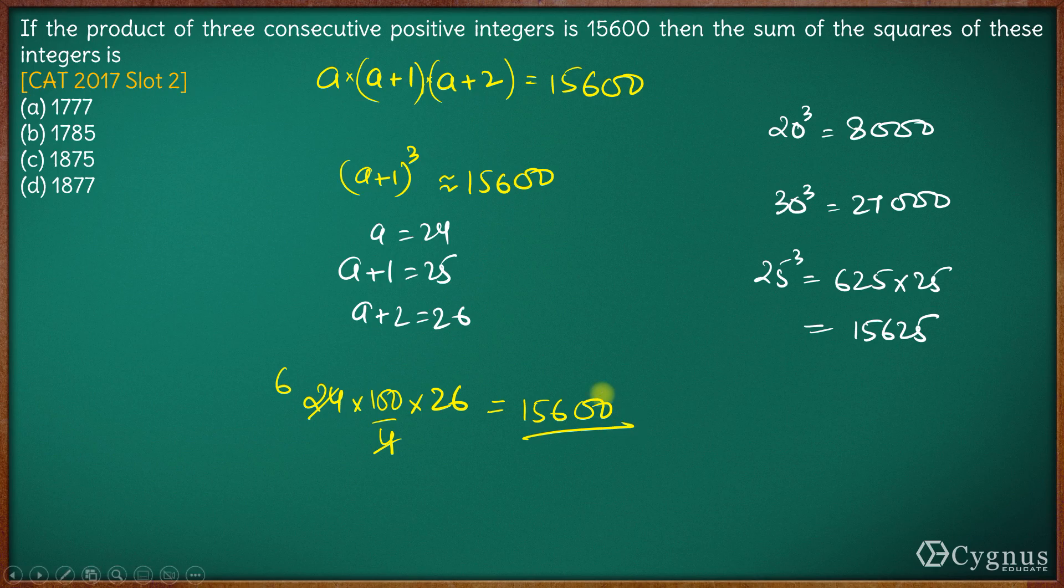So I get the same product 15600, hence the three numbers are 24, 25, and 26. Now we want the sum of squares of these integers.